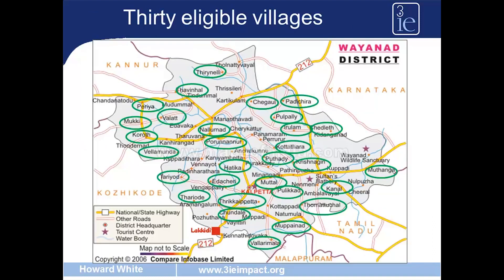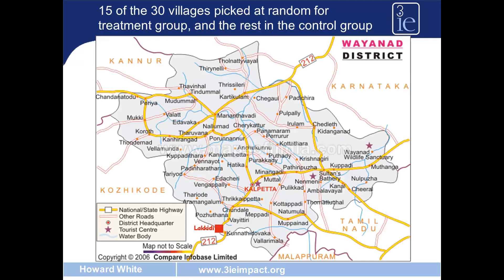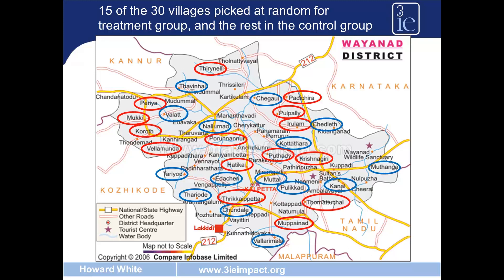Here's an example from a district in Kerala in southern India, in which 30 villages have been chosen to be eligible for the programme. Of those 30 eligible villages, 15 are chosen at random to be in the programme and the remaining 15 act as the control group. That's a randomised controlled trial.